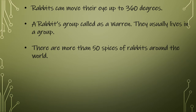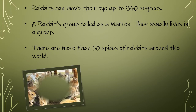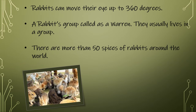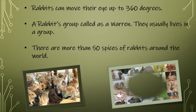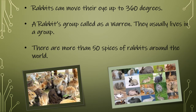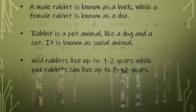Rabbits can move their eyes up to 360 degrees. A rabbit's group is called a warren and they usually live in a group. There are more than 50 species of rabbits around the world.